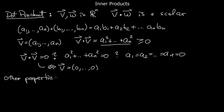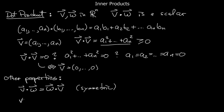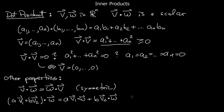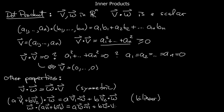Some other properties of the dot product: notice that v dot w is the same thing as w dot v — that product is symmetric. Also, if you take av1 plus bv2, a linear combination in the v, and dot that with w, you can distribute it as av1 dot w plus bv2 dot w. That's also clear from the formula. That property is known as bilinearity — it's linear in both variables. So it's linear in the v, and correspondingly linear in the second variable.